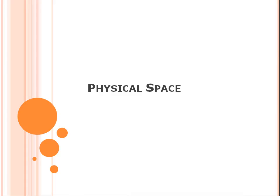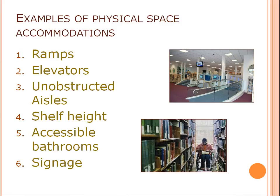When the ADA was passed, initial compliance activity focused on re-engineering library buildings using accessibility guidelines. Examples of physical space accommodations include ramps, elevators, wider aisles, more convenient shelf height, accessible bathrooms, and signage.